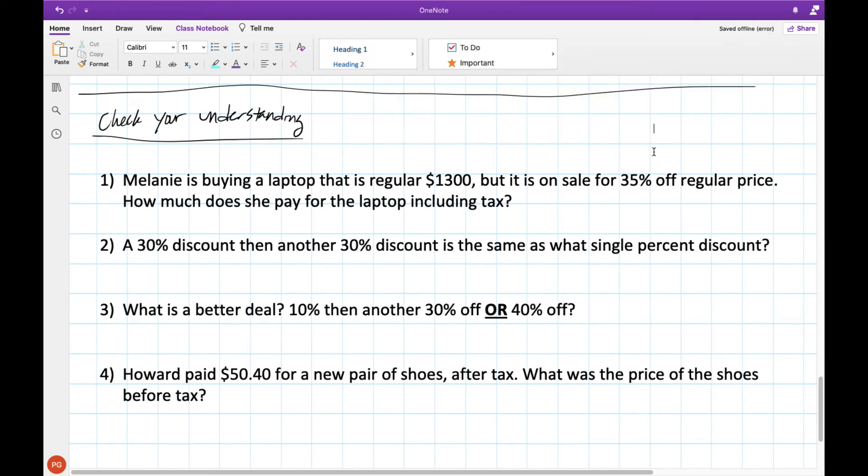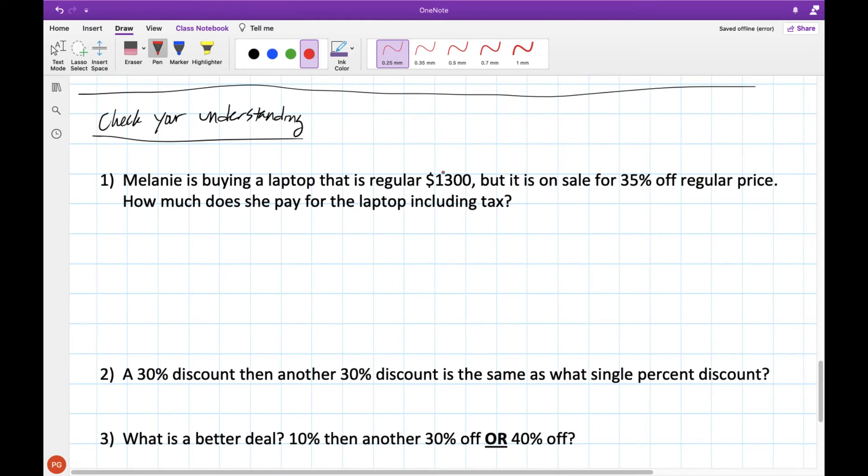All done? All right, let's go over the answers. For our first one here, we're told that the regular price is $1,300 on sale for 35% off. But then we also need to calculate how much she's paying, including tax. Now here, we're going to assume that she's in BC, which means that when we take 35% off, this is like paying for 65%, which is the same as 0.65. And then when we have taxes, it's 12% tax, which is the same as 112%, or 1.12.